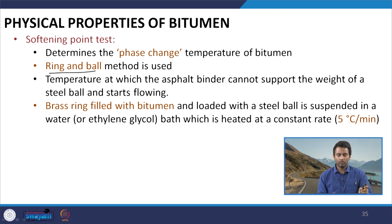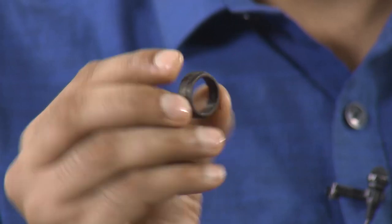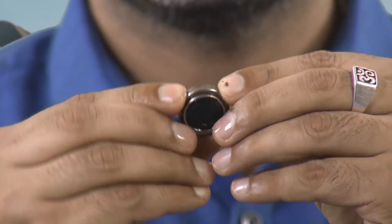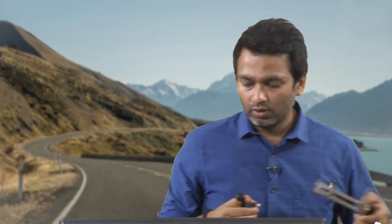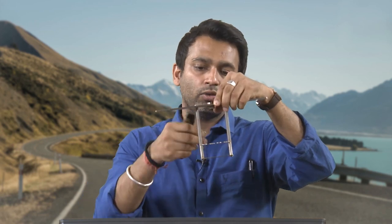Here we use a ring and ball apparatus — we have a ring, a ball, and a sample of bitumen. We have small brass rings filled with bitumen, giving a sample inside the brass ring. Once we fill the brass ring with bitumen, this sample is placed in the softening point holder, which has space for two samples.